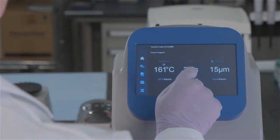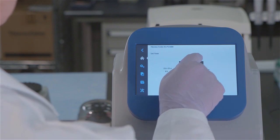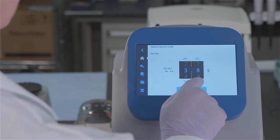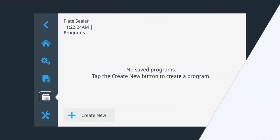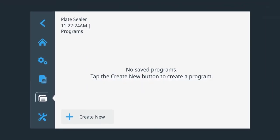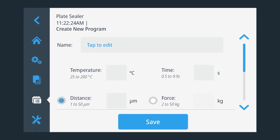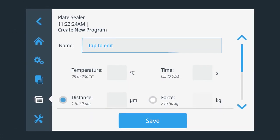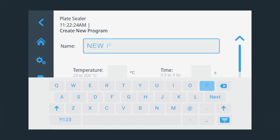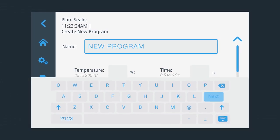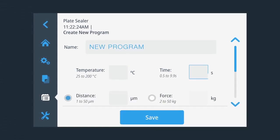The ALPS 5000 automated plate sealer offers ways to customize the sealing process and optimize performance. You can even save frequently used programs. To create a new program, tap create new on the touch screen. Tap the name field and enter the name of your new program. Enter the temperature and time from within the range specified on screen.